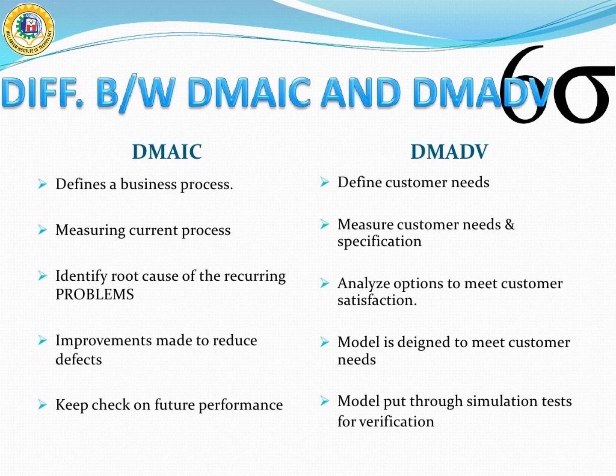The differences between DMAIC and DMADV: DMAIC addresses the business process, whereas DMADV addresses the design process and customer needs directly. DMAIC reduces or eliminates defects and is a reactive process, whereas DMADV prevents defects and is a proactive process. DMAIC includes a specific solution, whereas DMADV is part of the solution design process. DMAIC includes controls to sustain the benefits, whereas DMADV includes verification and validation of the finished design.